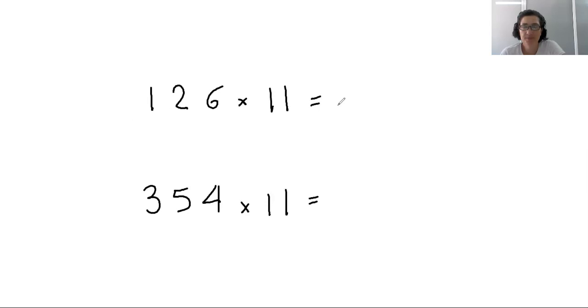So let's see if we can do something similar with a three digit number times 11. We write the first digit, 1. The sum of the first digit and the second digit is 3. Then the sum of the second and third digit is 6, I'm sorry, it's 8.